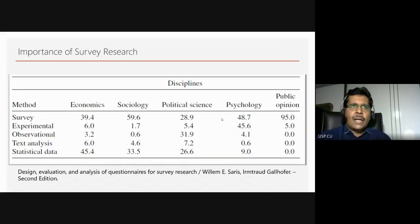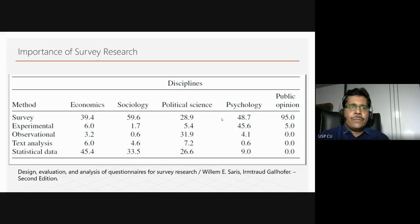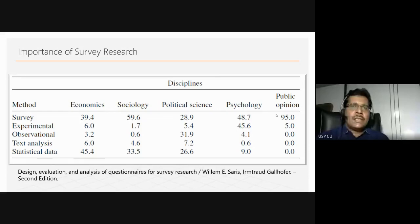I'll start off with talking about the importance of survey research. According to a book by Saris and Gelhofer — 'Design, Evaluation and Analysis of Questionnaires for Survey Research' — in economics about 39.4% of the work is by survey, in sociology it's about 59.6%, in political science 28.9%, in psychology it's huge, and in public opinion research it's almost 95%. So across a lot of allied fields, survey research is the most important method.